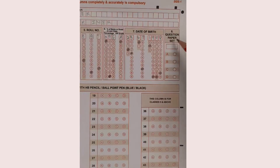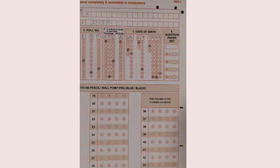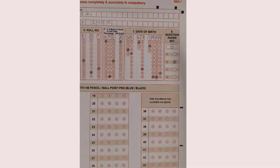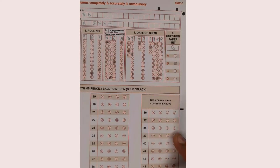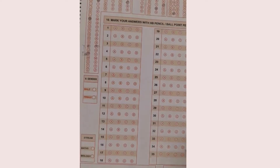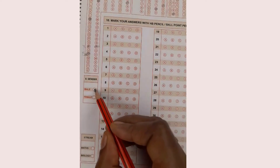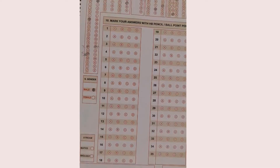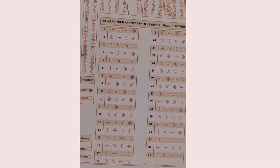For question number 8, the paper set: read your question paper carefully — it will mention which paper set it is. If it is paper B, you write B and circle B on the sheet. For question 9, gender: for boys circle male and for girls circle female — only one option to circle.